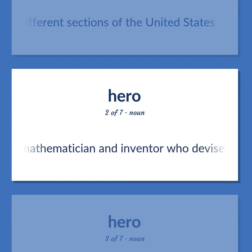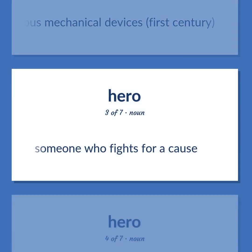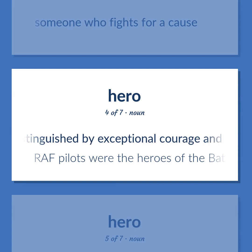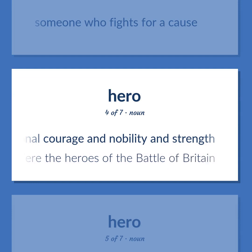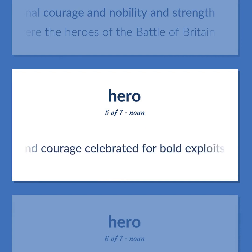Hero: Greek mathematician and inventor who devised a way to determine the area of a triangle and described various mechanical devices (first century). Also: someone who fights for a cause. Also: a man distinguished by exceptional courage and nobility and strength. Example: Wrath pilots were the heroes of the Battle of Britain. Classical mythology: a being of great strength and courage, celebrated for bold exploits, often the offspring of a mortal and a god.